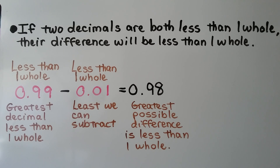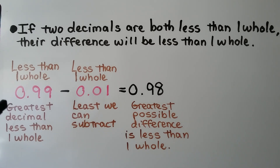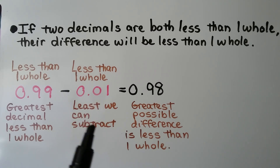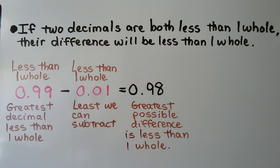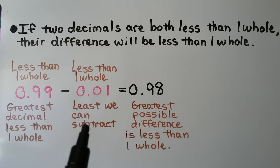If two decimals are both less than one whole, their difference will be less than one whole. We have 99 hundredths — that's less than one whole and it's the greatest decimal that's less than one whole. We're subtracting one hundredth, the least we can subtract. We get 98 hundredths, the greatest possible difference, and it's still less than one whole.